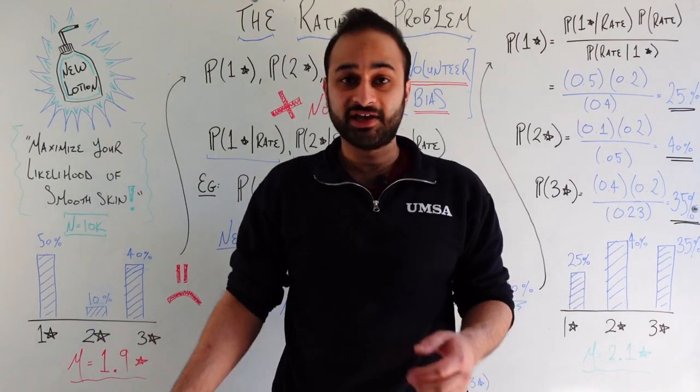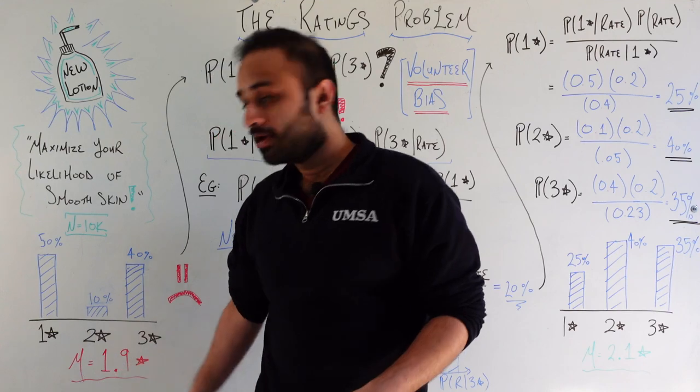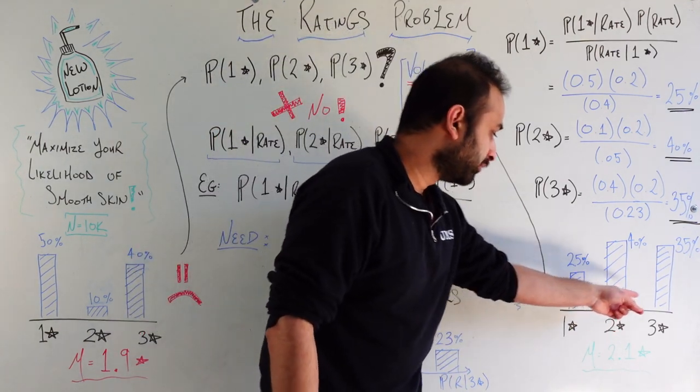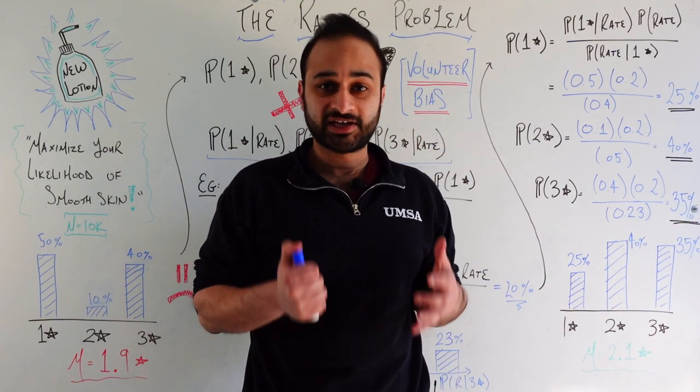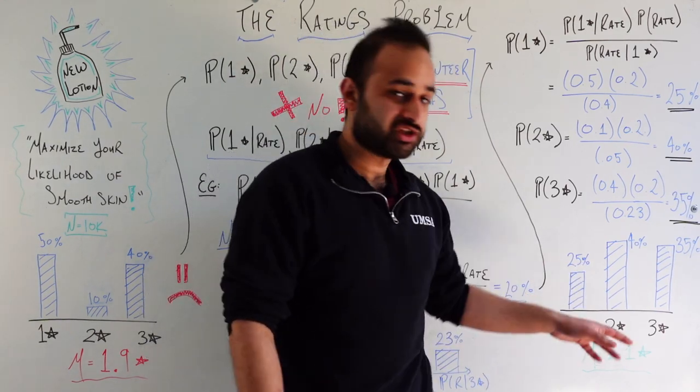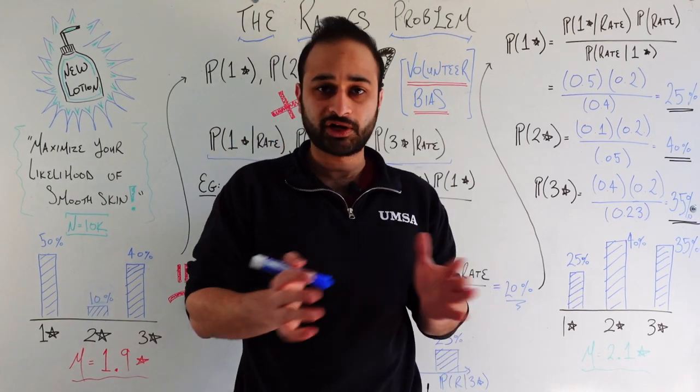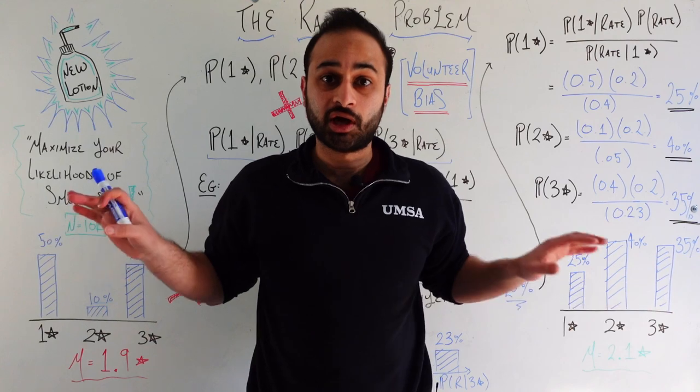So if we rank these three categories, the highest one was one star, then three star, then two star. We've actually reversed those rankings. Now it's two star, followed by three star, followed by one star. So clearly this unbiasing has had a big effect on this distribution. If we take the average now, it's equal to 2.1 stars, which gets us past that two threshold. So the average doesn't move a lot, but the distribution has changed a bunch.